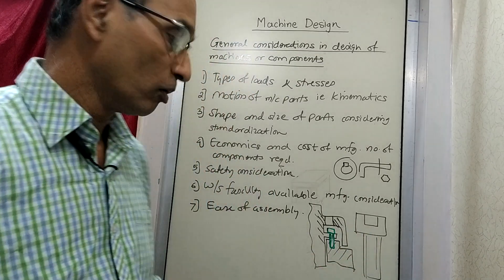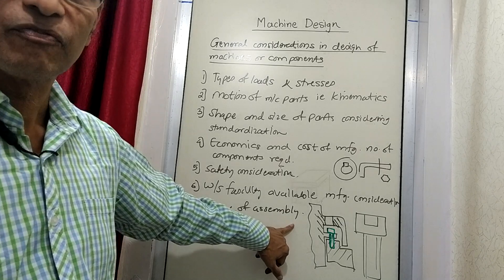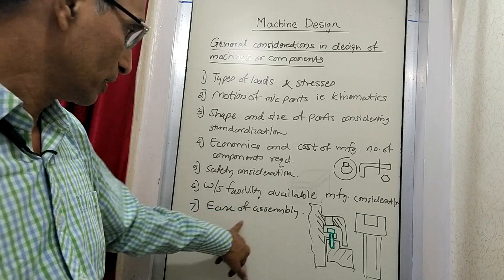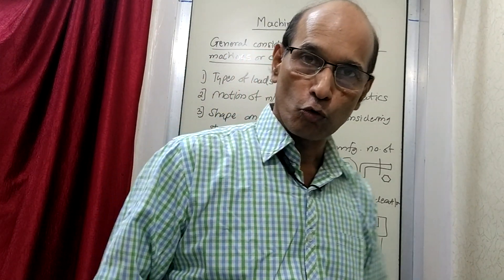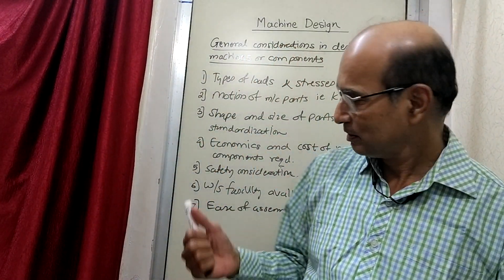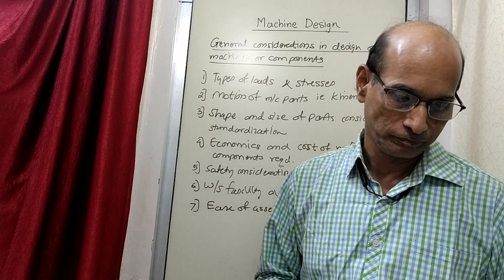So these are all examples of the fact that you have to take into account the assembly also while designing the components.